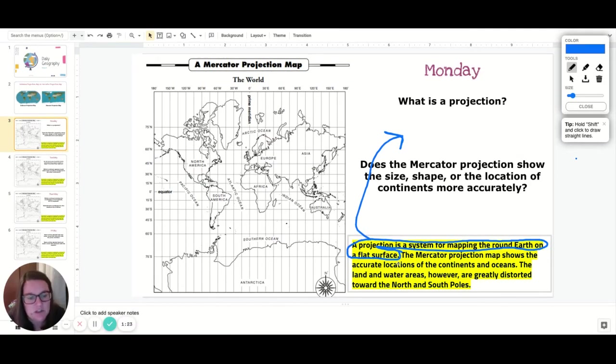Does the Mercator projection show the size, shape, or location of the continents more accurately? Again, we're going to read this down here, guys. So let me change my color. The Mercator projection map shows the accurate locations of the continents and oceans. So the Mercator projection map shows the location of continents most accurately. Those are your answers here today. If you have any questions, please let me know.